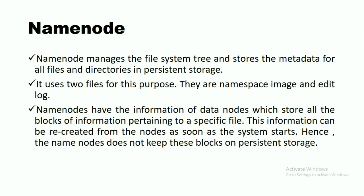The NameNode manages the file system tree and stores the metadata for all files and directories in persistent storage. It uses two files for this purpose: the namespace image and the edit log. The NameNode also has information about the DataNodes which store all the blocks of information pertaining to a specific file.